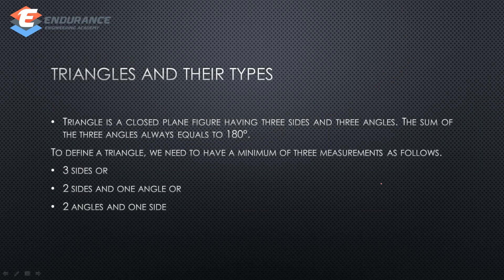The next one is triangle and their types. A triangle is a closed plane figure. If you use three sides to close the figure, it is a triangle. If you add three angles, the sum is 180 degrees. To define a triangle, there is a minimum of three measurements — either three sides, or two sides and one angle, or two angles and one side.